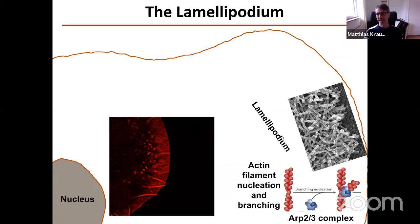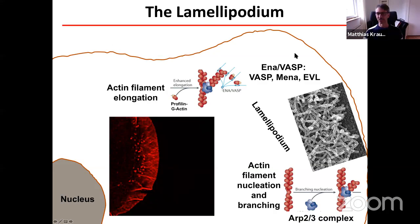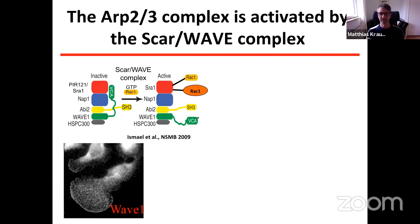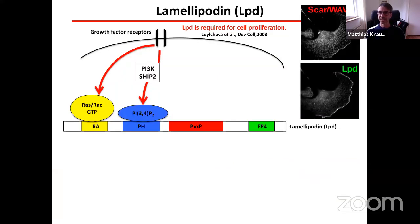The force for lamellipodia protrusion comes from the polymerization of actin filaments directly underneath the plasma membrane. The main nucleator of actin filaments in lamellipodia is the Arp2/3 complex. Actin filaments can then be elongated, and this elongation is controlled by the VASP protein family. The Arp2/3 complex is activated by the SCAR/WAVE complex — a protein complex composed of five proteins: HSPC300, WAVE, Abi, Nap1, and Sra1. This is auto-inhibited in trans, and auto-inhibition is relieved by three coincident signals: Rac, PIP3, and phosphorylation. This frees the VCA domain of WAVE proteins to bind and activate the Arp2/3 complex, leading to branched nucleation of actin filaments.